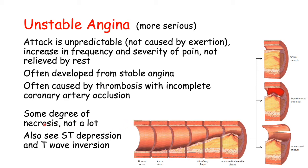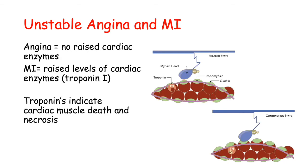In unstable angina you will also see ST depression and possibly T wave inversion on the ECG. The key difference between unstable angina and myocardial infarction is that in angina you will not see raised cardiac enzymes — specifically troponin — whereas in myocardial infarction you will see elevated levels of cardiac enzymes.